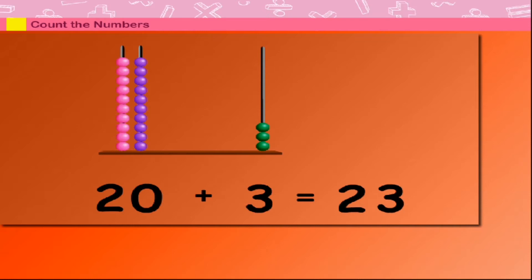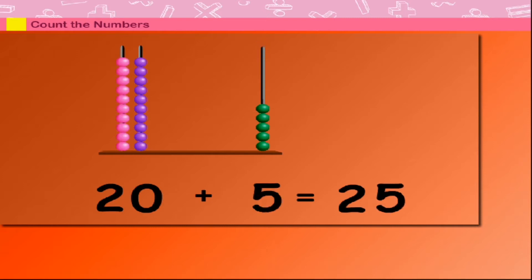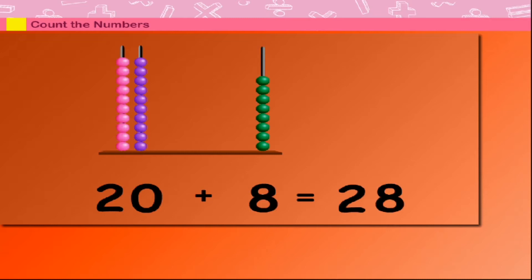20 plus 4 is equal to 24. 20 plus 5 is equal to 25. 20 plus 6 is equal to 26. 20 plus 7 is equal to 27. 20 plus 8 is equal to 28.